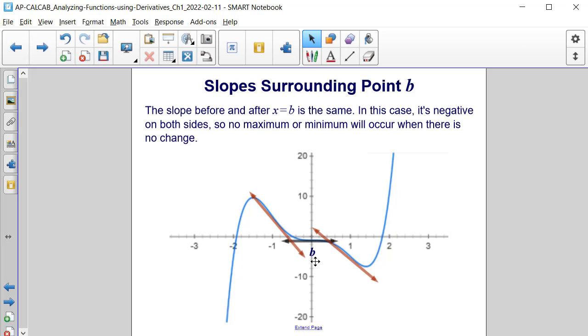We can see that the slope both before and after x equals b is the same. In this case, they are both negative. Therefore, no maximum or minimum will occur when there is no change in slope.